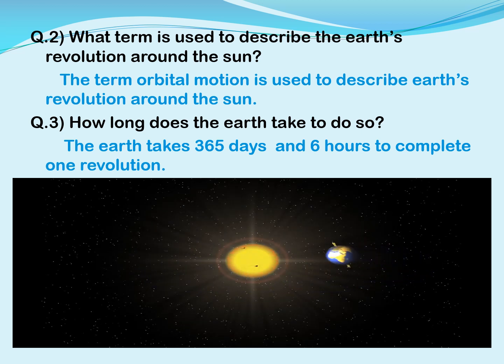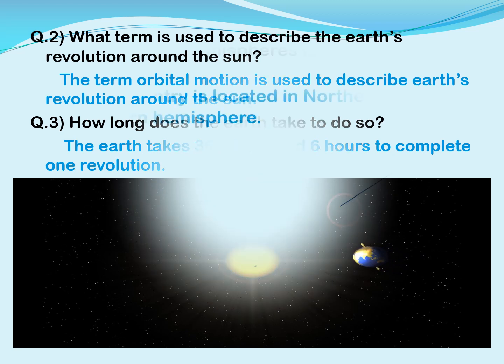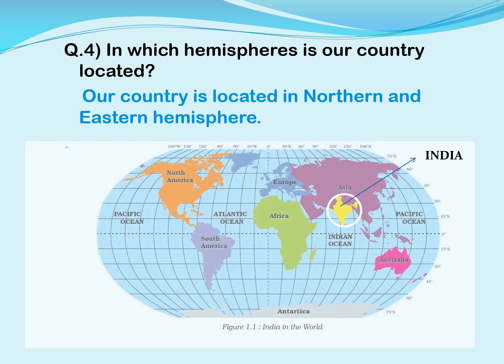Another question: how long does the Earth take to complete one revolution? The Earth takes 365 days and 6 hours to complete one revolution. In which hemispheres is our country located? To determine this, we need a world map. India is shown in the circle on the map, and we can clearly say that India is located in the northern and eastern hemisphere.